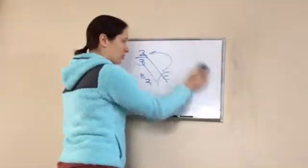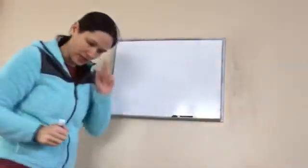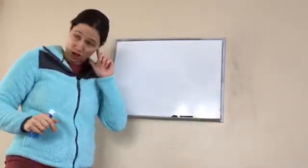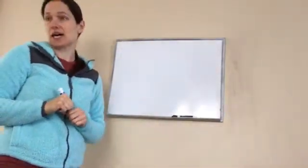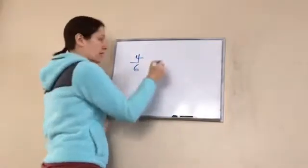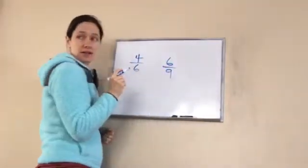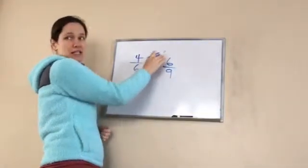All right. Now, listen to this proportion. And this one's going to look a little bit different. It says, write down this proportion. 4 is to 6 as 6 is to 9. 4 is to 6 as 6 is to 9. That's how I would write that.